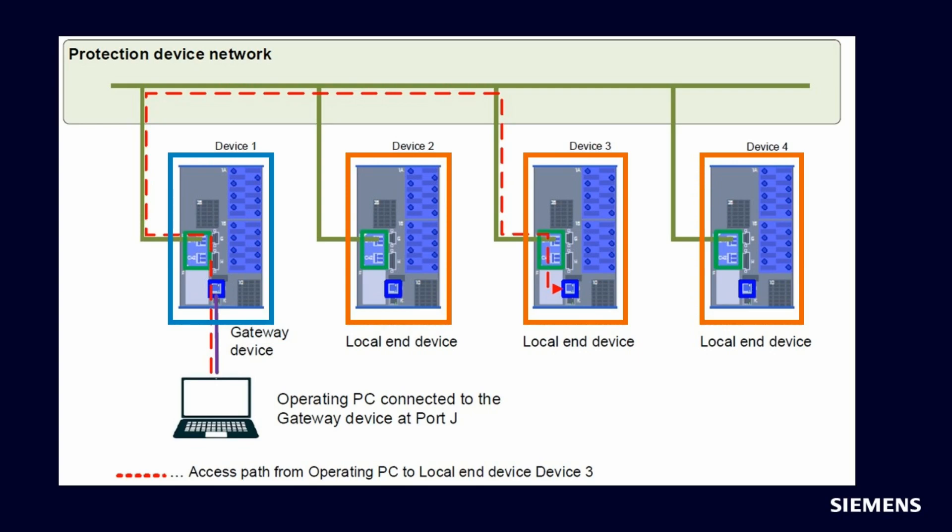In the application of the distributed bus bar protection, the gateway device will be the central unit, and the local end devices will be the bay units of the distributed bus bar protection.